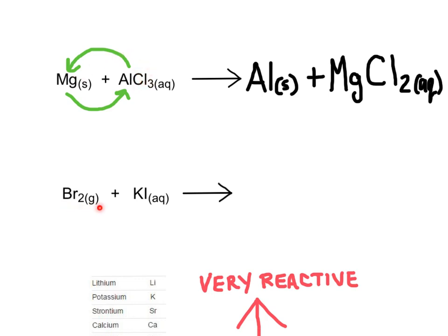In the second reaction, bromine — a non-metal — reacts with potassium iodide, which is an ionic compound with potassium as the metal and iodine as the non-metal. Since there aren't two metals to switch here, we're going to have the two non-metals switch places with each other. So we can have either two metals switching or two non-metals switching in a single displacement reaction.